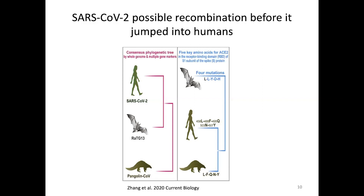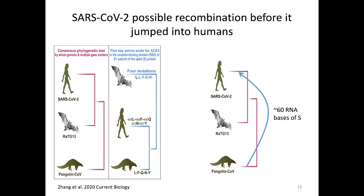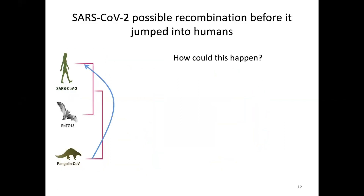You're getting two different signals: most of the genome gives you the bat pattern, but a small section gives you the pangolin pattern. When you see that discordance between the whole genome and a small section, we think that can be caused by recombination. The easiest explanation is that about 60 bases of RNA in the S gene got transferred from the strain circulating in pangolins to the strain that led to the current epidemic in humans. So while most of the genome is evolving normally, a small section jumped across the phylogeny into a new genome, creating a hybrid.